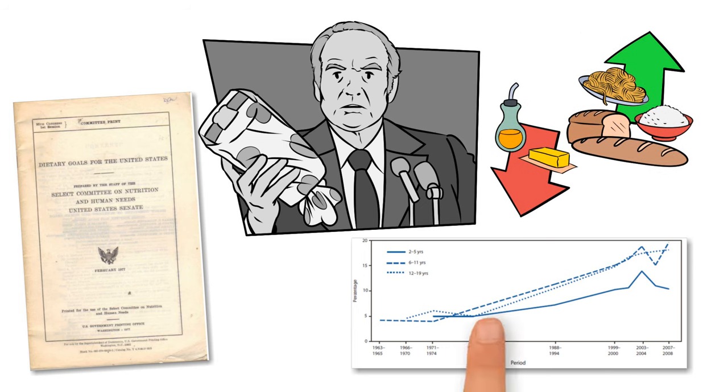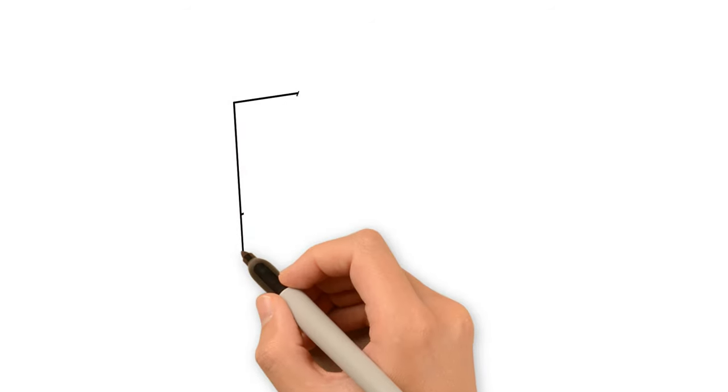Over the next decade, even as the federal government continued promoting McGovern's nutritional guidelines, obesity rates doubled.